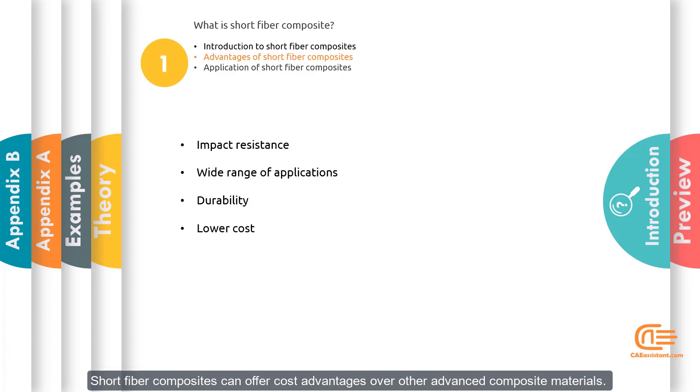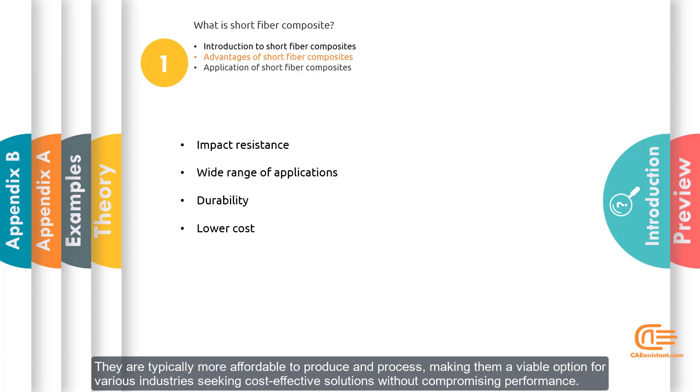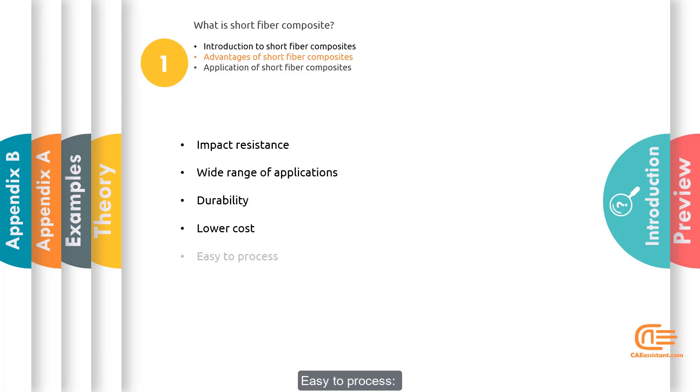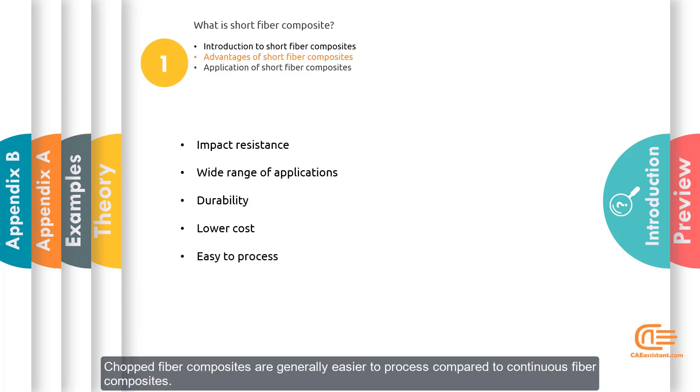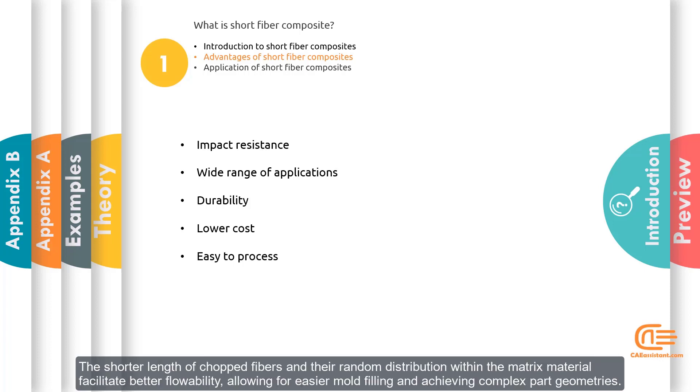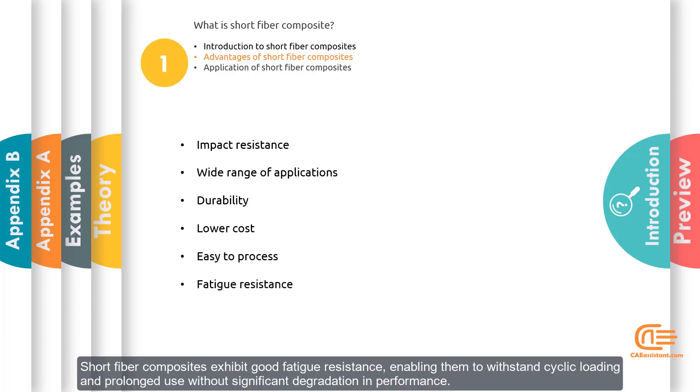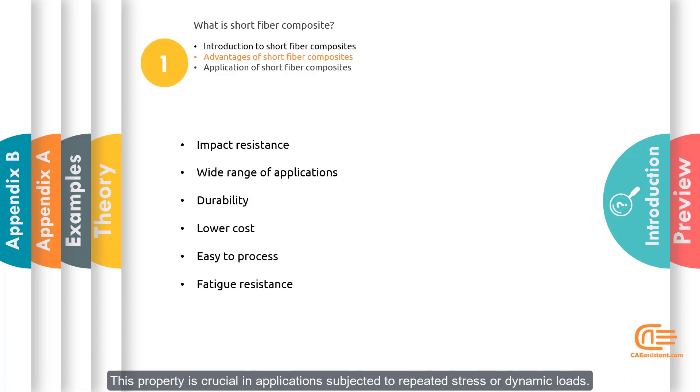Lower cost: Short fiber composites can offer cost advantages over other advanced composite materials. They are typically more affordable to produce and process. Easy to process: Chopped fiber composites are generally easier to process compared to continuous fiber composites. The shorter length of chopped fiber and their random distribution within the matrix material facilitate better flowability. Fatigue resistance: Short fiber composites exhibit good fatigue resistance, enabling them to withstand cyclic loading and prolonged use without significant degradation in performance.